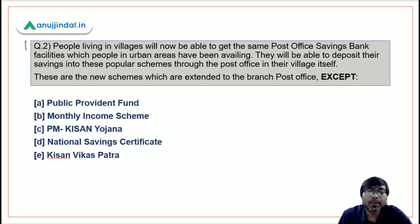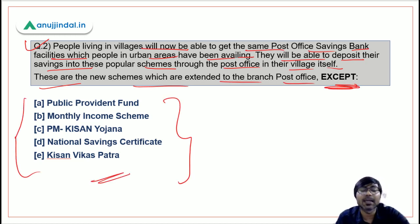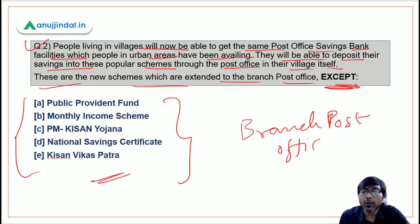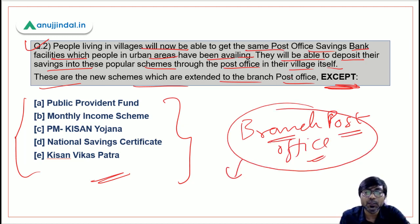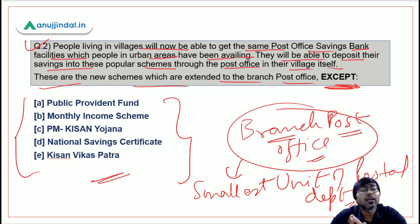Question two: People living in villages will now be able to get the same post office savings bank facilities that people in urban areas have been availing. They'll be able to deposit their savings into popular schemes through the post office in their village itself. These are new schemes extended to the branch post office. The branch post office is the smallest unit of the postal department in rural areas.